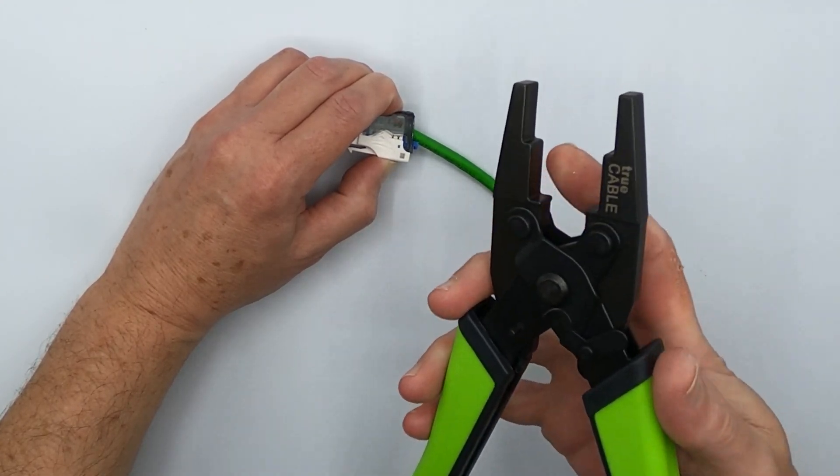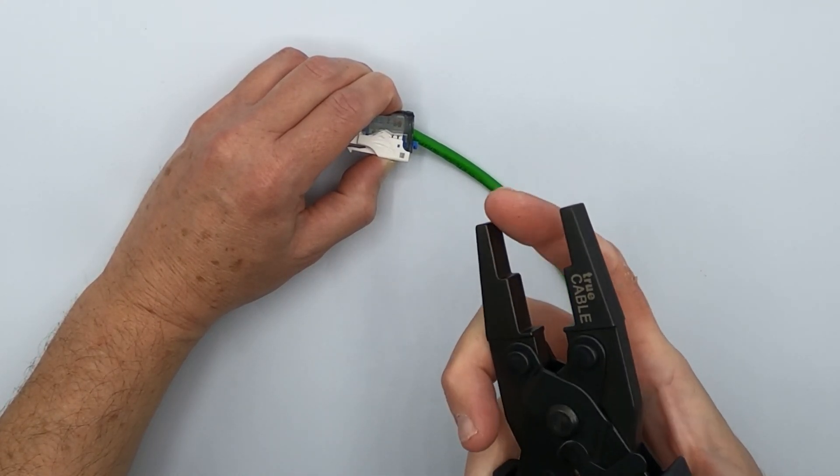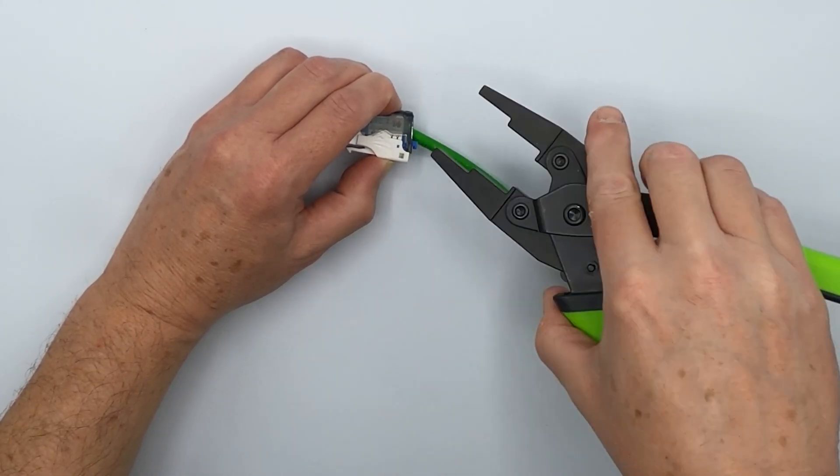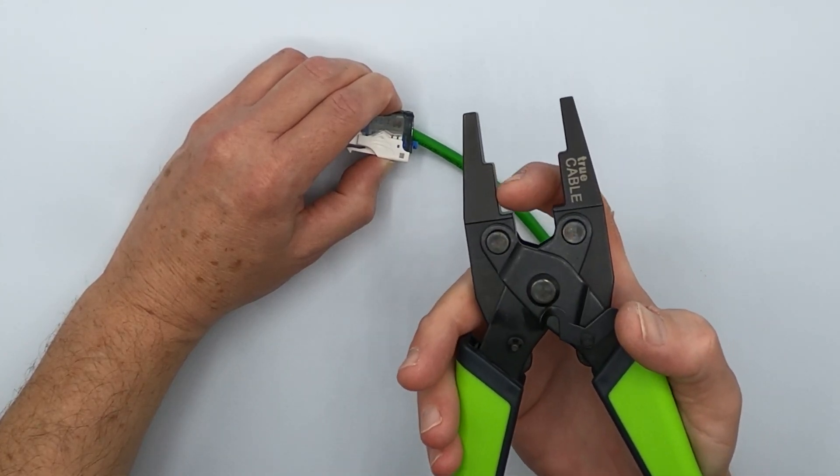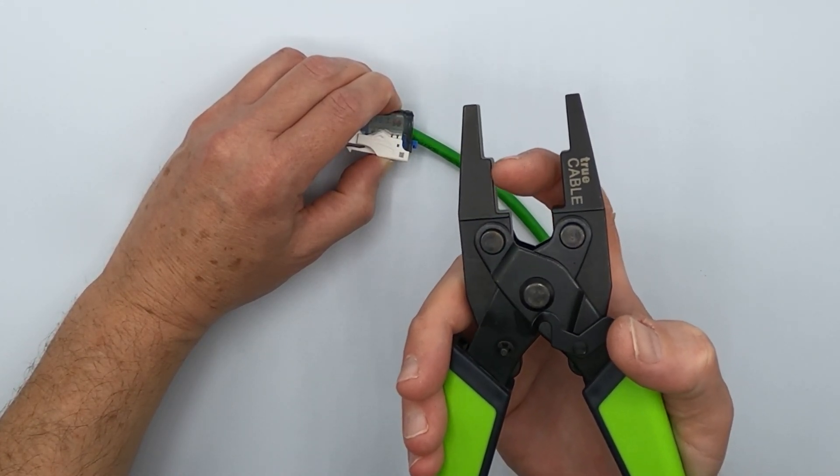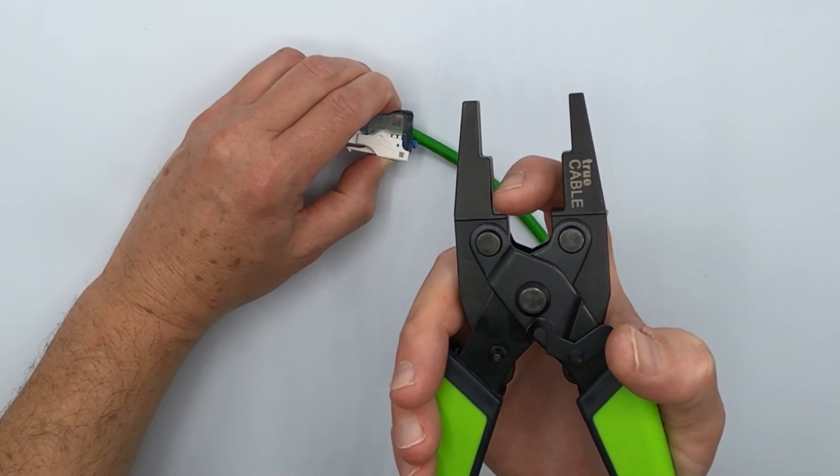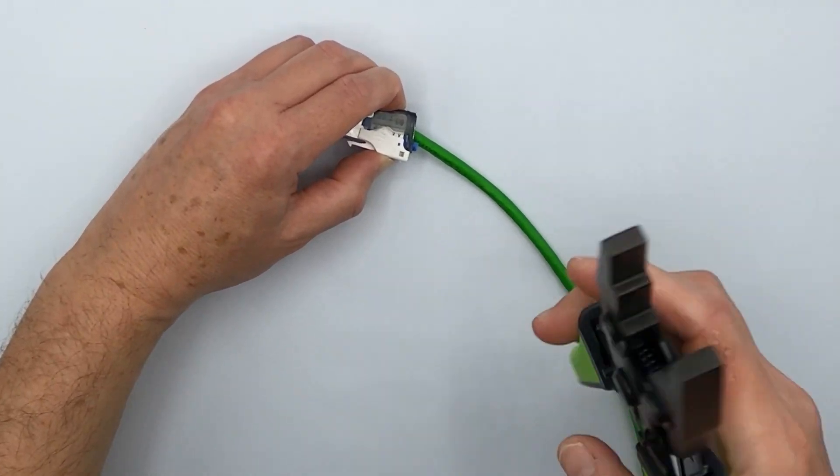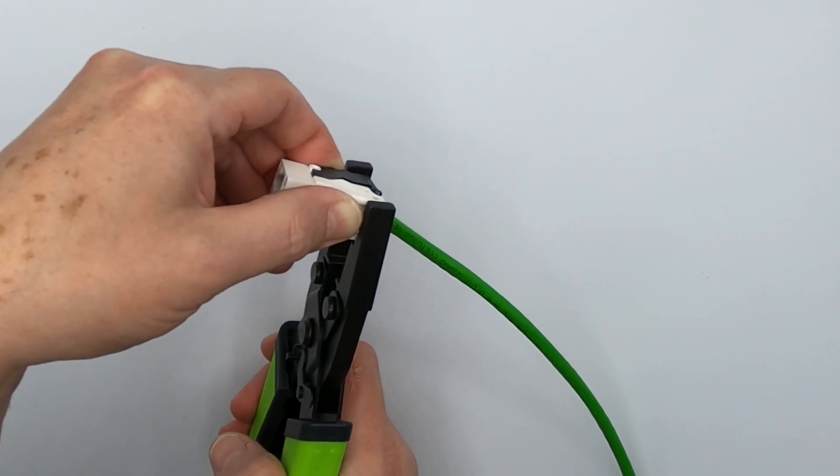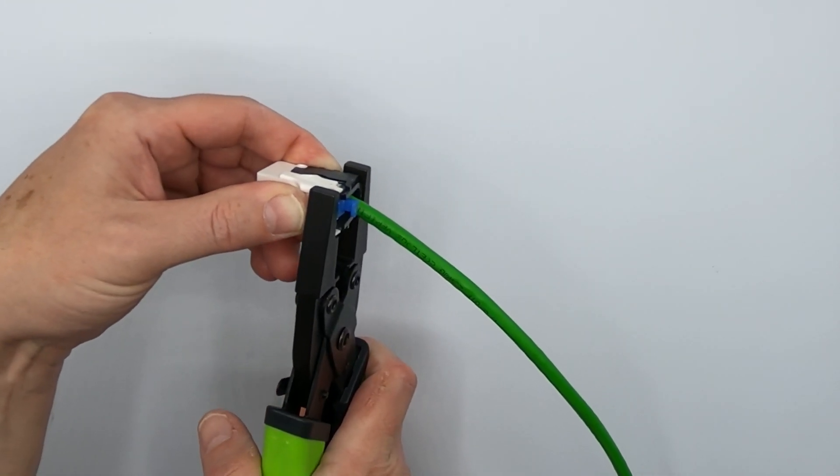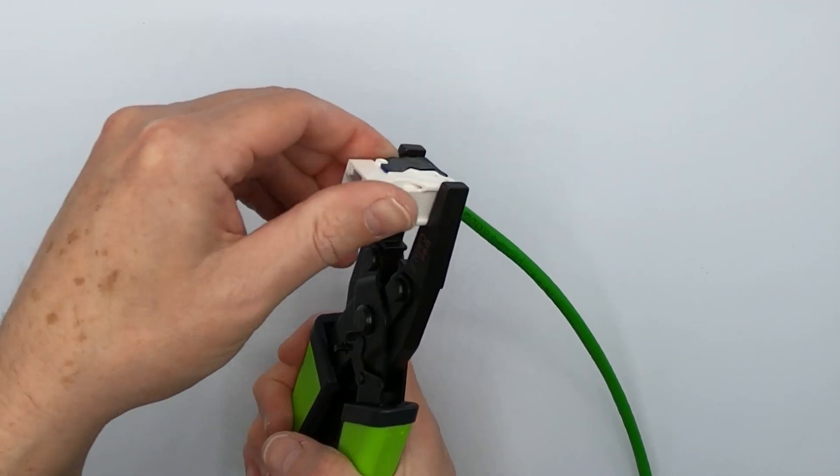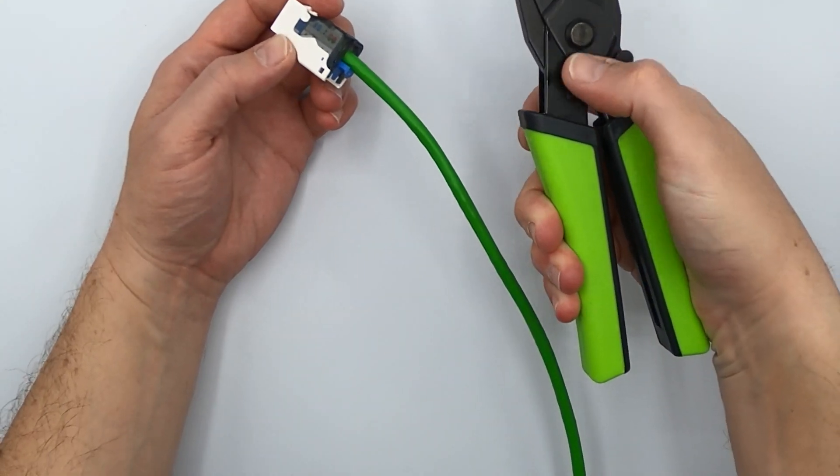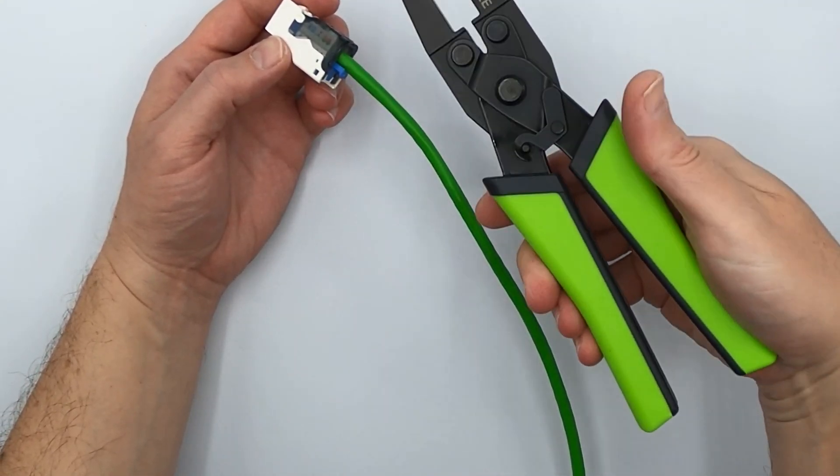Including our field termination plug. The outer cutouts here are for keystone jacks, the toolless keystone jacks. The slightly narrower inside steps are for our field termination plugs. So to use this is quite simple. All you do is at the rear of the jack, put it so it looks like that and snap it closed. Really is that simple and it locks away.